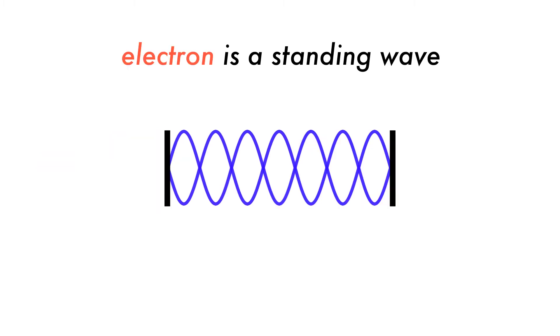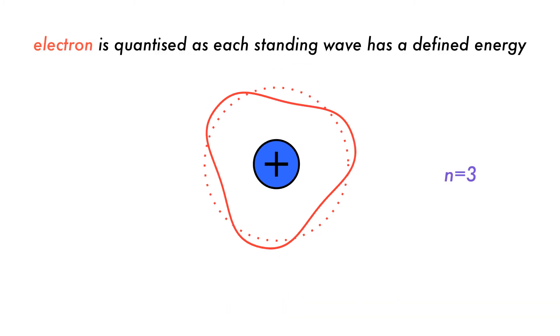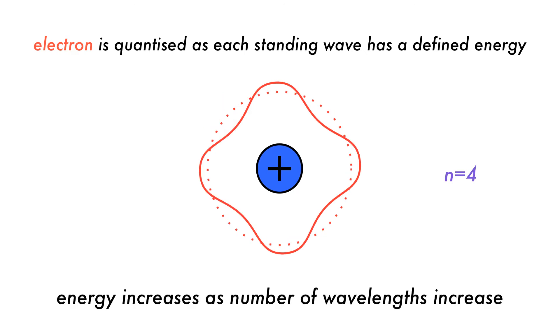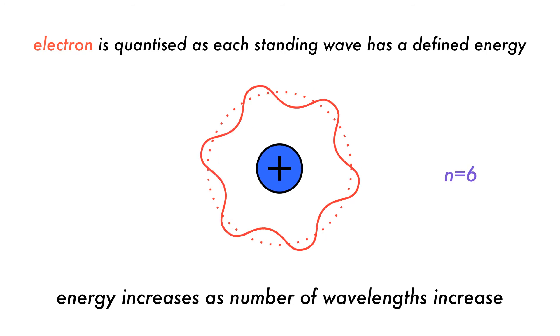Electrons are standing waves. However, they are not linear standing waves like a guitar string, rather they are circular with a fixed number of wavelengths. We can then make a connection to the fact that each electron has a quantized energy because each standing wave has a fixed wavelength. As we increase the number of wavelengths, we also increase the energy of the electron.